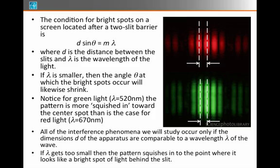If lambda gets too small, imagine what happens. These angles get really small. And all these interference patterns get squished in towards theta of zero. Because when lambda becomes infinitesimally small, then all the thetas become small. And we just see a bright dot.